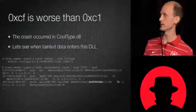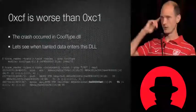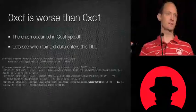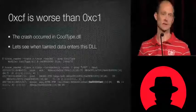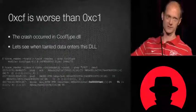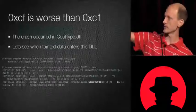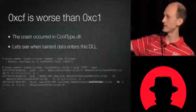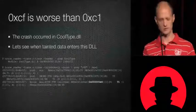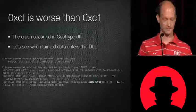So then what I do is figure out — the crash was in CoolType. Let's see the first time a tainted instruction was used in CoolType to see if I can figure out what went wrong. The first two are irrelevant because they're writes on top of data. The first time a tainted byte was actually read, E4 was read. That's interesting — that's not C1 or CF.